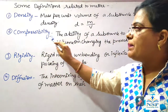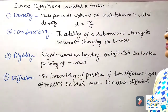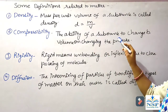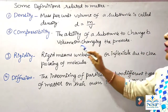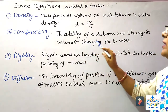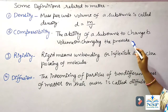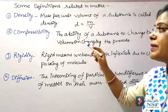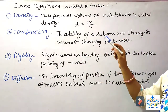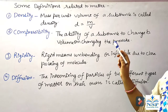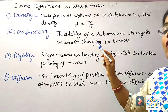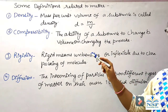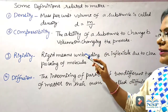Number 2, Compressibility. The ability of a substance to change its volume on changing the pressure is called compressibility. Compressibility is higher in the state of gases and least in the state of solid.